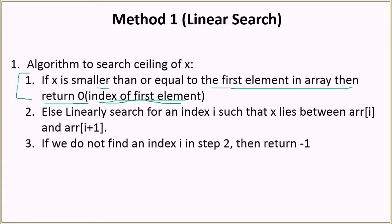If that is not the case, then we linearly search for an index i such that x lies between array[i] and array[i+1]. We iterate over the whole array and find an i such that x is lying between array[i] and array[i+1]. If we do not find any index i which satisfies this condition, we return -1 saying that there is no ceiling available.